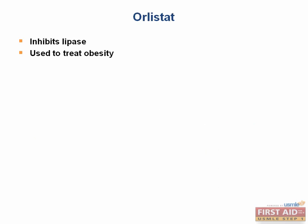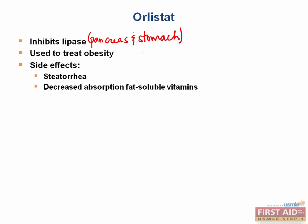We'll finish this video lecture by discussing orlistat. Orlistat was designed to treat obesity, and it directly inhibits the lipases of the pancreas and stomach. By inhibiting lipase, fats are unable to be broken down and absorbed. This can cause the side effect of steatorrhea and decreased absorption of fat-soluble vitamins — that's right, vitamins A, D, E, and K.